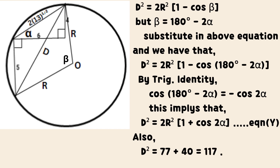Also, D squared equals 117, which we call equation X.